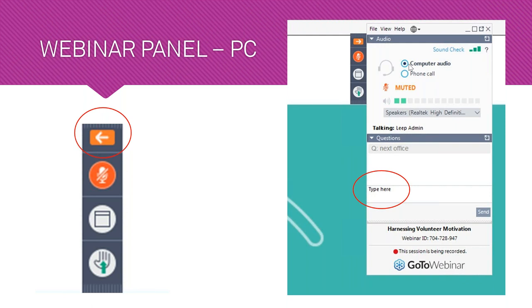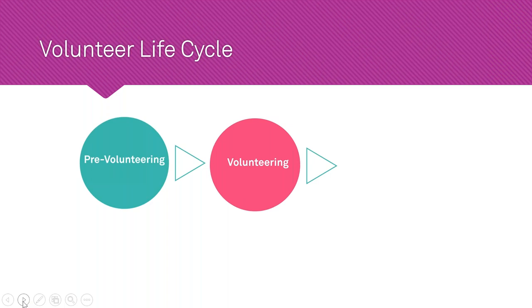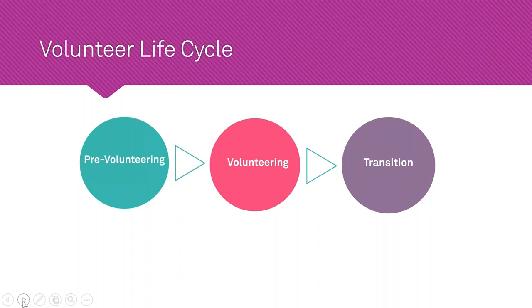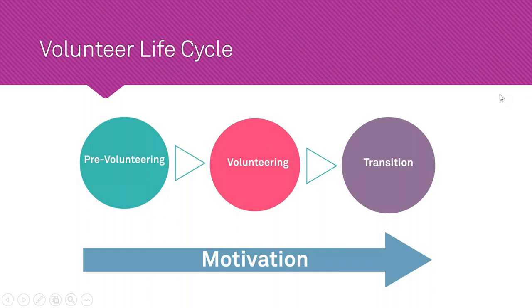During this webinar we'll be referring to three parts of the volunteer life cycle — you'll find a copy of our model in your resource kit. In the pre-volunteering stage, you assess motivation and match a volunteer to an appropriate role. In the volunteering stage, we unpack processes and strategies to assist in harnessing volunteer motivation. In the transition stage, we explore processes for preparing the volunteer for the next part of their journey. The key message is that volunteer motivation is integral to every stage of the life cycle.